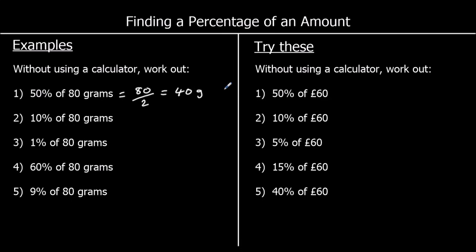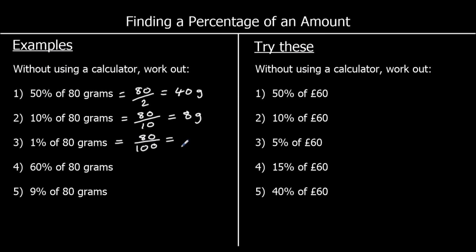Question 2, 10%: to find 10%, we divide by 10. 10% is the same as 1 tenth, and 80 grams divided by 10 is 8 grams. Question 3, we've got 1%, so 1 hundredth of 80. 80 divided by 100 is the same as 8 tenths, or 0.8 grams.